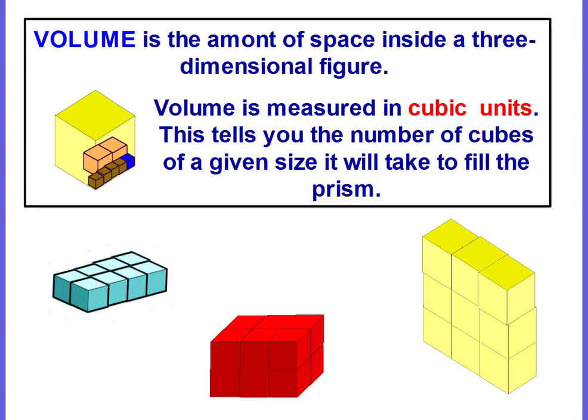Volume is the amount of space inside a three-dimensional figure. Volume is measured in cubic units. This is where the cube comes from. When we talked about exponents, our exponent unit, and we were talking about 3 squared, 4 cubed, this is where the cube comes from. It's from three-dimensional shapes because you're multiplying together three dimensions. So volume tells you the number of cubes of a given size that it will take to fill up the prism.